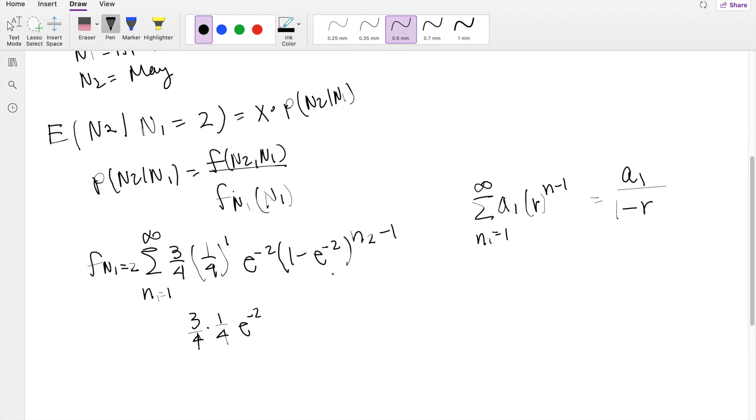I mean, anything to the 0 power is just 1, so this is going to be the initial, A1, and this is equal to 3 sixteenths, e to the negative 2.